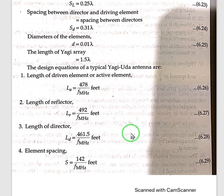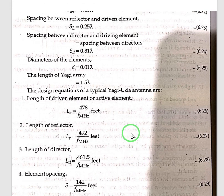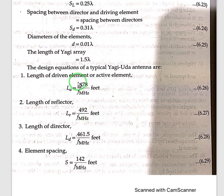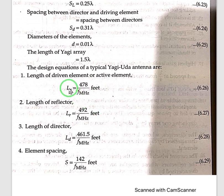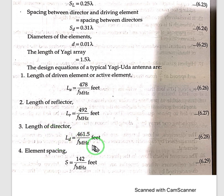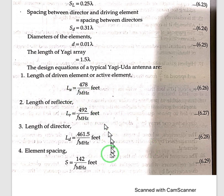These values are driven by the following equations: the length of the driven element is 478 divided by frequency; the length of the reflector is 492 divided by frequency; the length of the director is 461.5 divided by frequency; and the spacing is 142 divided by frequency. These formulas can be used to find the different lengths in practical designs.